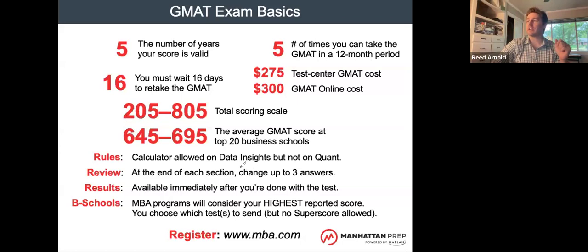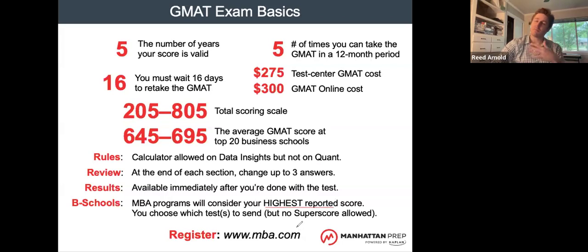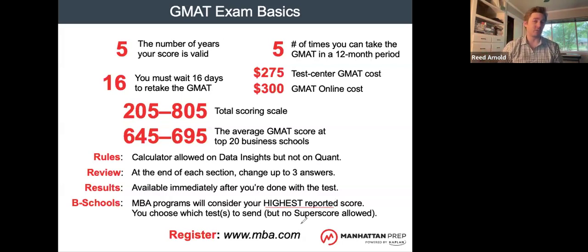You do have a calculator in the Data Insights section, but not on the Quant, as mentioned. A new change in this version: you can change up to three answers per section, which is different from the old test where you could not change answers at all. You get your results immediately regardless of which version you take. Business schools will look at your highest score — you get to choose which test to send, but you can't super-score. If you had a higher Quant one day and a higher Verbal another, you can't combine them; it's the highest overall score that counts.